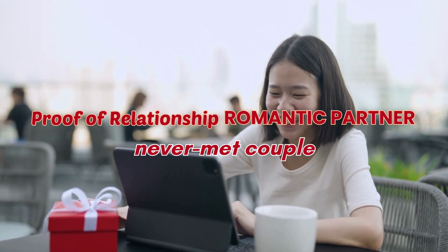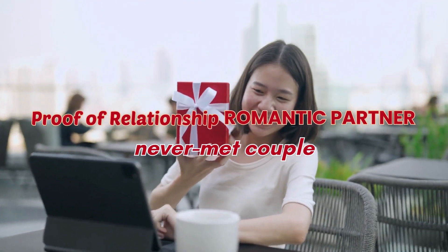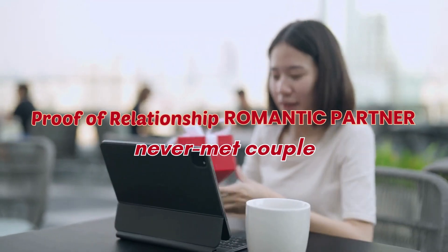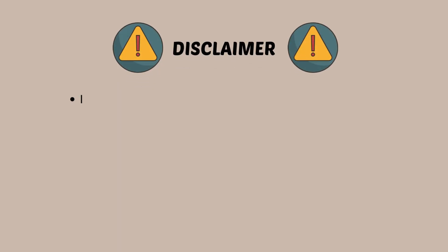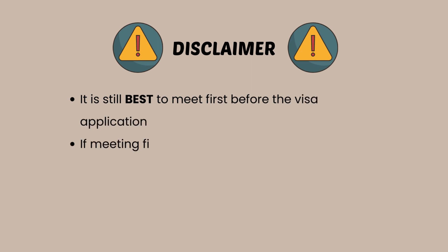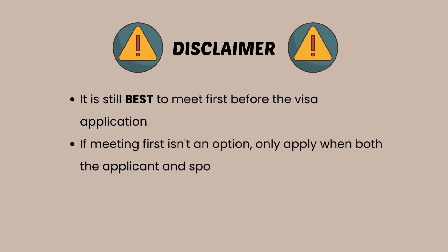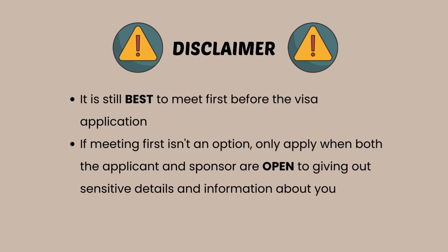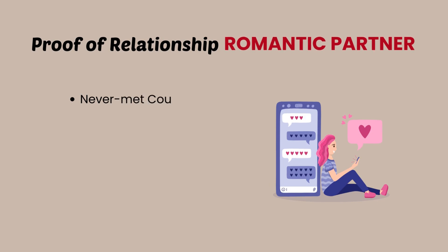Now, what about those partners who have never met due to the pandemic or other extenuating circumstances? Before I proceed, here's a little disclaimer: for me, it is still best to meet first before you apply for any visa, as the chances are increased with a couple that has already met. If meeting each other isn't an option, then make sure that both the applicant and the sponsor are open to giving out a lot of sensitive details and information about your relationship. As a never-met couple, it is best if you can create a relationship timeline.